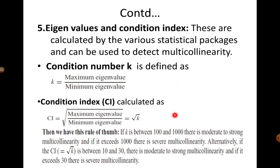You also have eigenvalues and the condition index. The condition number k is the maximum eigenvalue divided by the minimum eigenvalue. Most statistical packages can calculate these eigenvalues for you. The rule of thumb: if k is between 100 and 1000, you have moderate to strong multicollinearity; if k exceeds 1000, there is severe multicollinearity. The condition index is simply the square root of k, and the same limits apply based on the same logic.